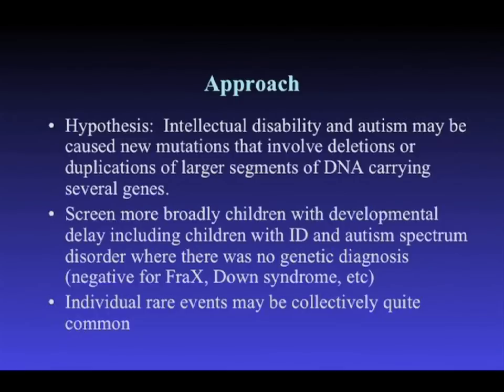When deciding what diseases to go after, instead of focusing initially on a specific neuropsychiatric disease, we decided to screen as broadly as possible children with developmental delay who had already tested negative cytogenetically, negative for fragile X, and didn't have Down syndrome — which back in 2006 was about 80% of all kids coming into the clinic for genetic testing. We were working on the idea that we would identify many different genomic regions contributing to disease, where any one region would contribute a small proportion of the total — individually rare, but collectively common.